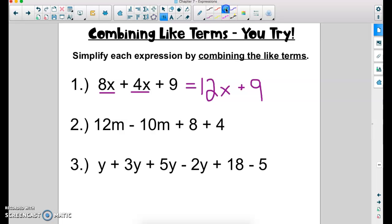In number 2, 12m minus 10m would be 2m. But then I also have another pair of like terms right here. I have 8 plus 4. 8 plus 4 is 12. And I can't simplify it any more than that because this is a constant and this has an m.